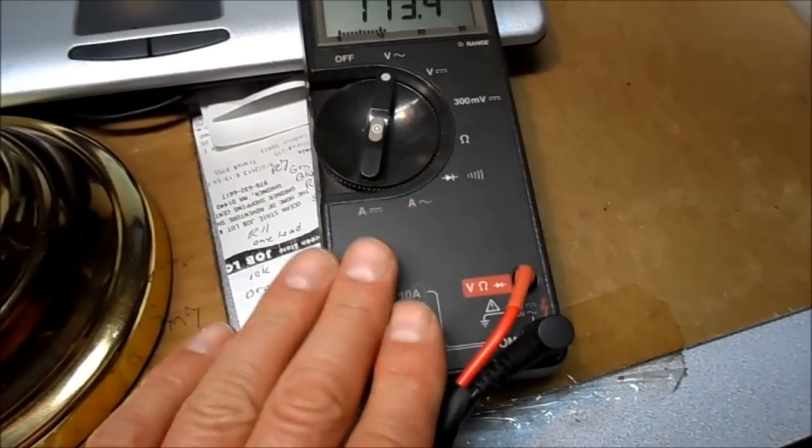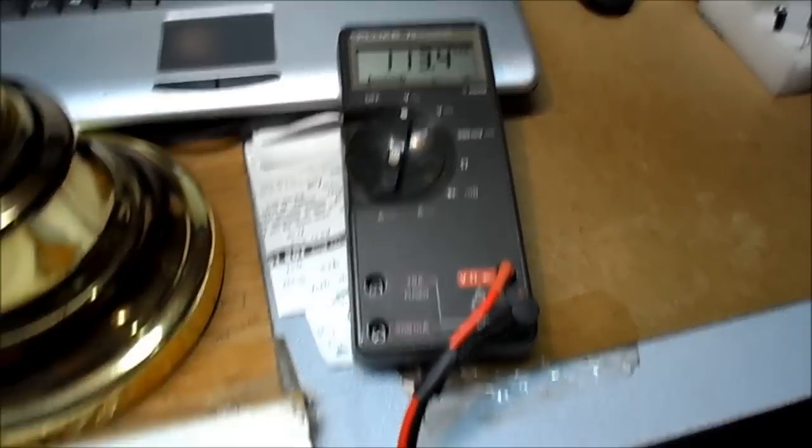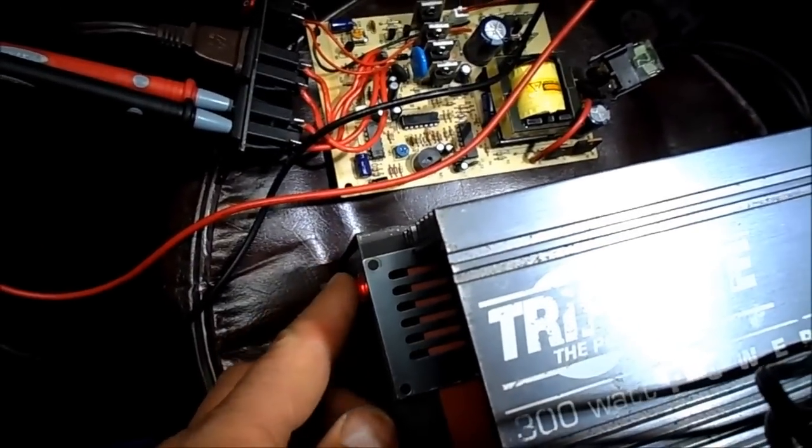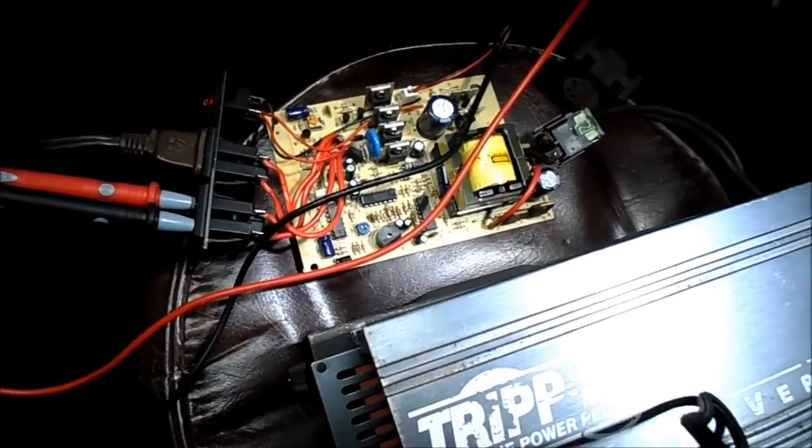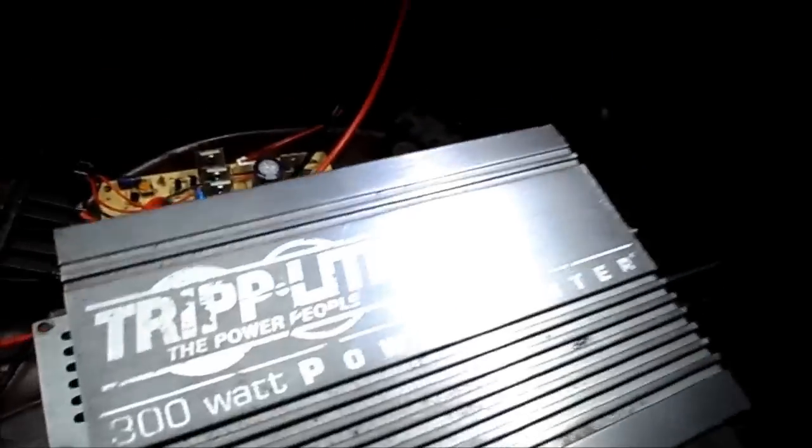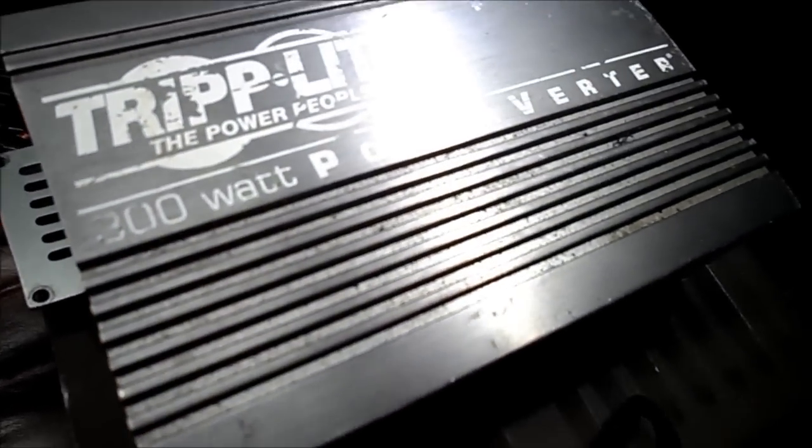And if you use a true RMS meter, it will say 120. I'm pretty certain I've done that before. So we'll kill the power here. That's a wrap again for the Triplite 300 watt power inverter.